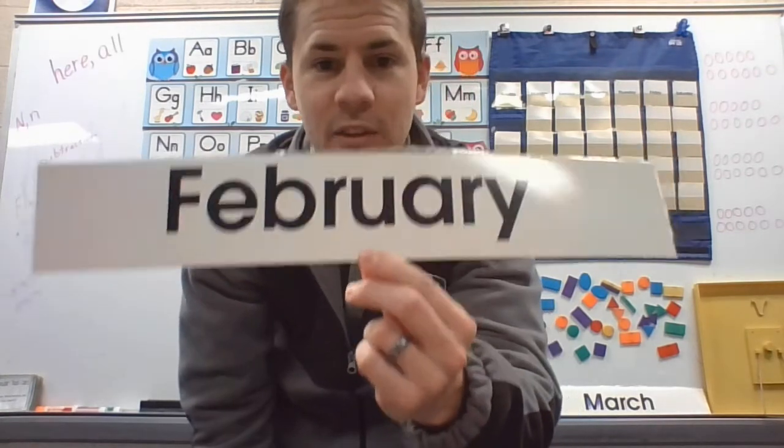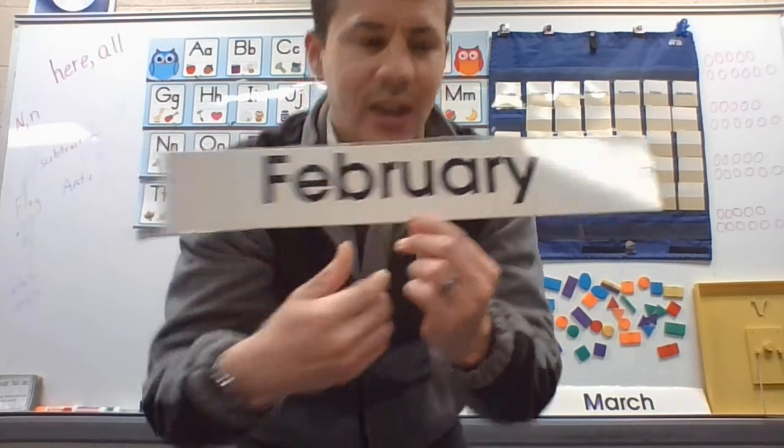It's after January. January starts with F. F-E-B. What is it? February. Everybody read February. This is February. January, February, March, and April. This is February and it's the second month.